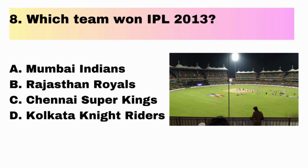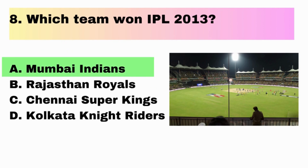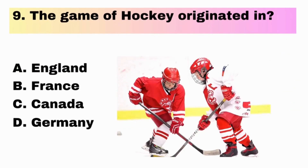Question 8. Which team won IPL 2013? A. Mumbai Indians, B. Rajasthan Royals, C. Chennai Super Kings, D. Kolkata Knight Riders. Answer is A. Mumbai Indians.